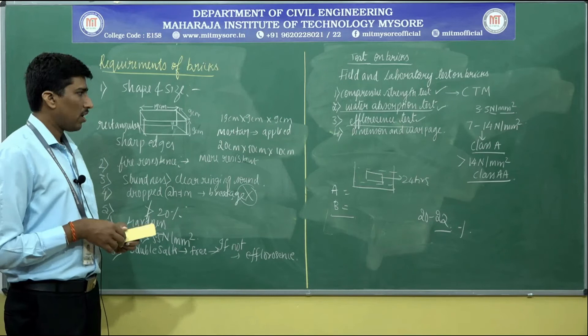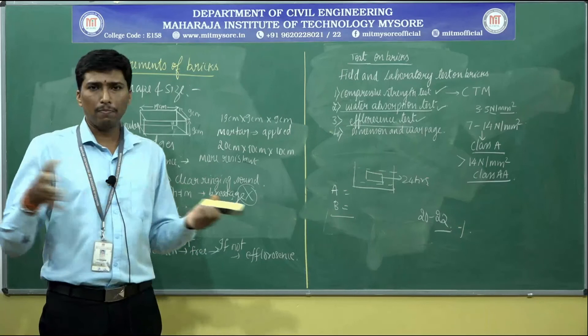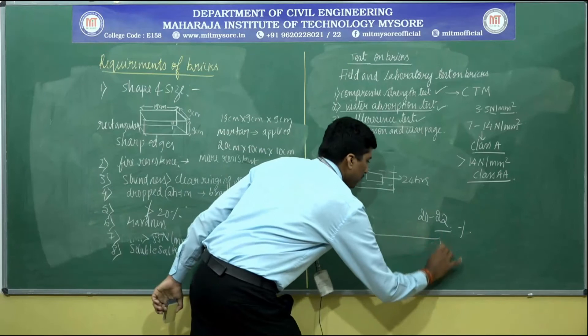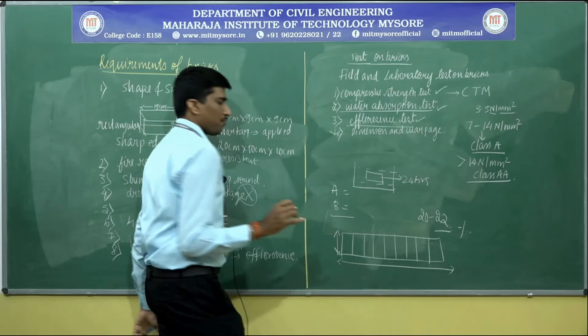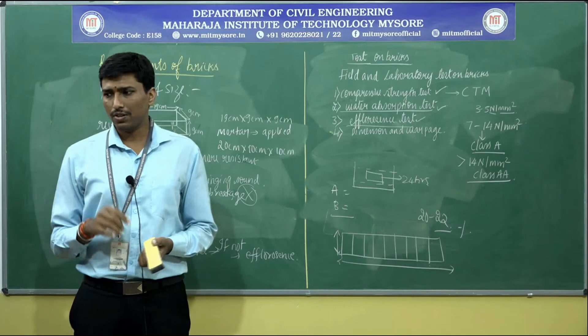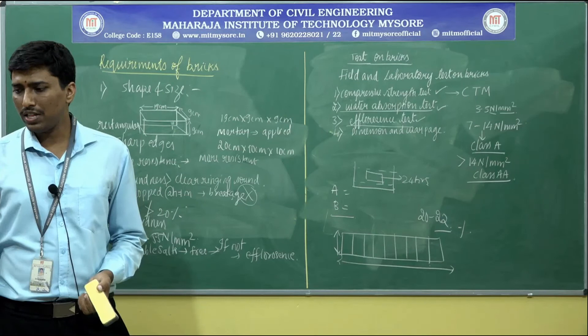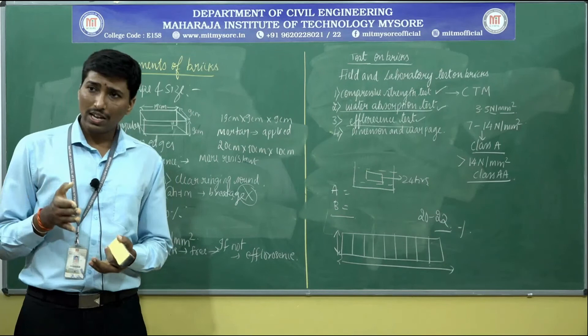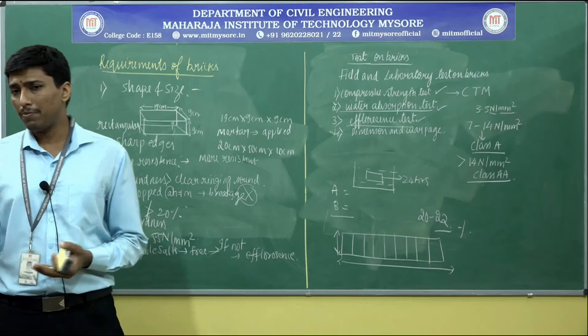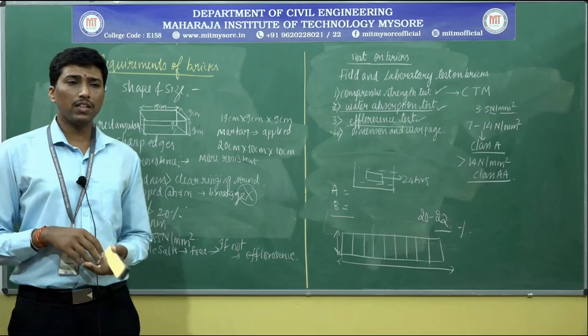Dimension and warpage test: bricks of size 190 × 9 × 9 cm are laid continuously in a row to check uniformity of dimensions. The acceptable length range is 3680 mm to 3920 mm; width is 1740 mm to 1860 mm; height is similarly 1740 mm to 1860 mm. This checks whether bricks are of uniform size.